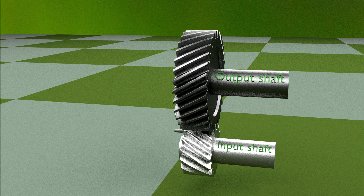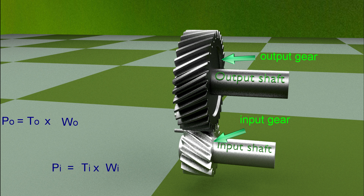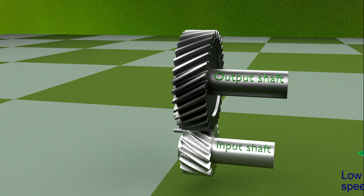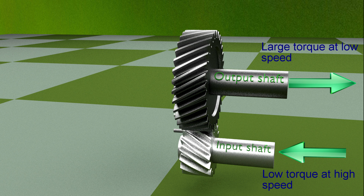The power input is given by input torque times the input gear rotational speed, and it must be equal to the output power — that is, output torque times the rotational speed of the output gear. Since the rotational speed of the output gear is half of the input gear, the torque delivered by the output shaft will be double the input torque. This means we can get large torque at low speed by applying low torque at higher speed. This basic principle is used in a gearbox to achieve different torque and speed requirements.